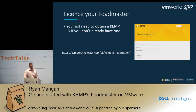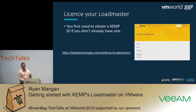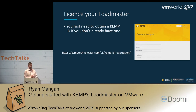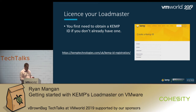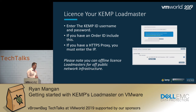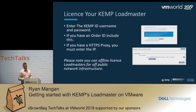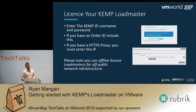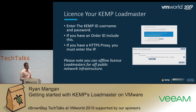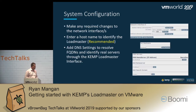When logging into the web panel for the first time, you'll need a Kemp ID — an email address and password. Once registered, you can license the appliance. If you've placed an order with Kemp Technologies, you'll have an order ID; if not, you can get a 30-day trial. The load master will function for 30 days, but remember to license it before that period expires or it will stop working. Note: if you're working in complex off-network environments such as military, nuclear, or water infrastructure, you can license the load balancer offline using a special key. If you use HTTPS proxies like Zscaler, enter those details to allow internet authentication.